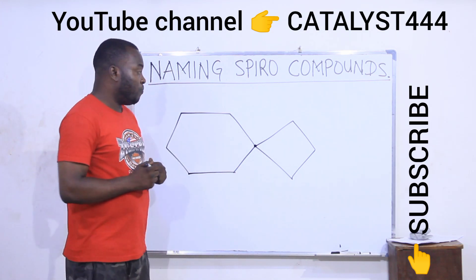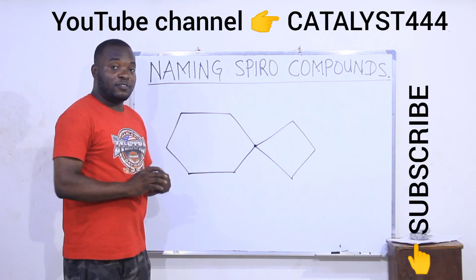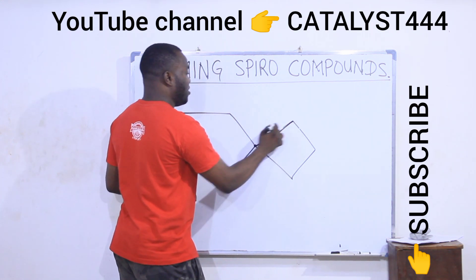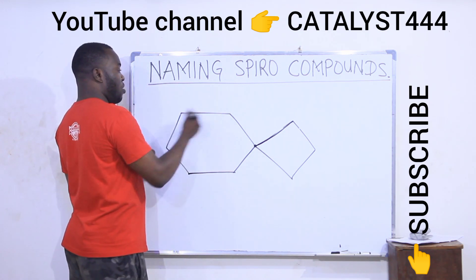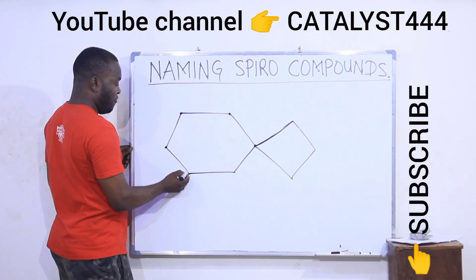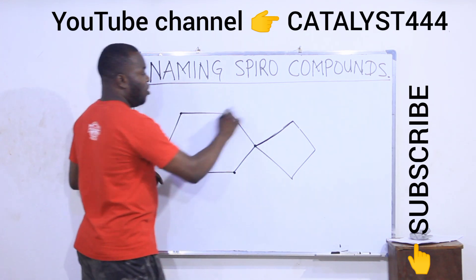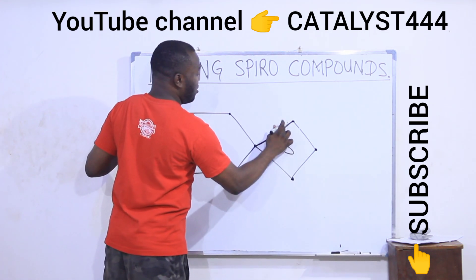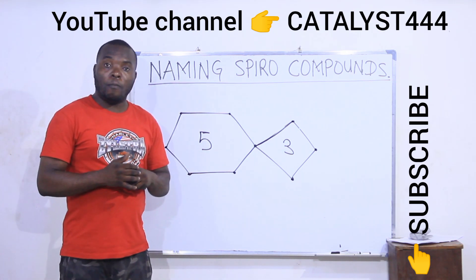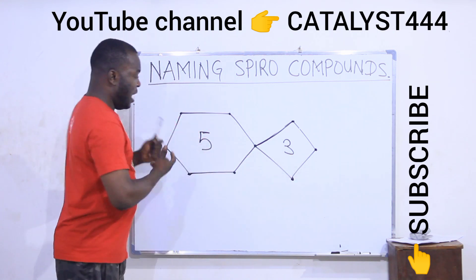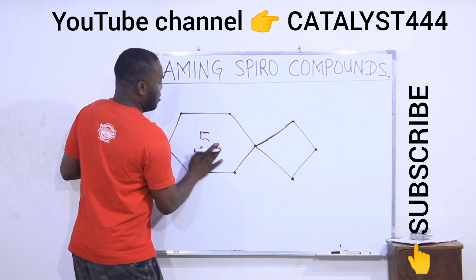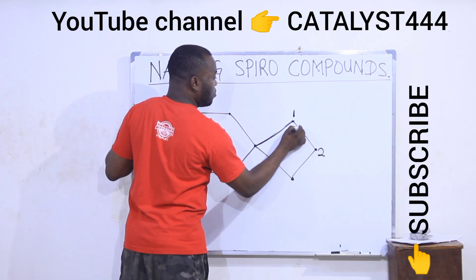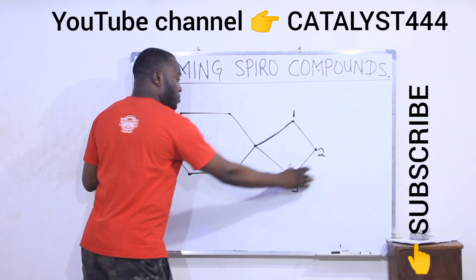Now how do we name a spiro compound? You number the compound first. Start numbering from the lower cyclic ring first. On one side I have five carbons, on the other side I have three carbons. I will start from the lower ring — this is number one, two, three. Then I am done numbering my lower ring.